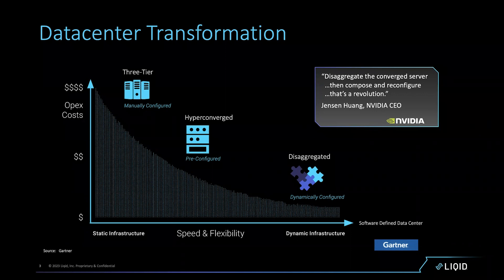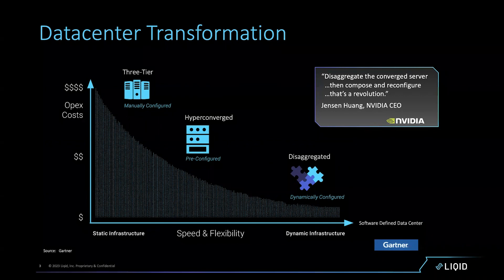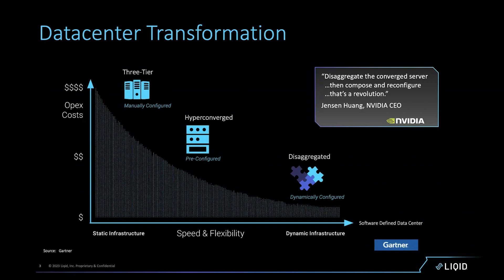We think the software-defined autonomous data center of the future is where we are headed. To get there, two fundamental technologies are required: number one is the disaggregation of hardware, and number two is intelligent software that takes pools of disaggregated hardware and reconnects or composes them back into physical servers.